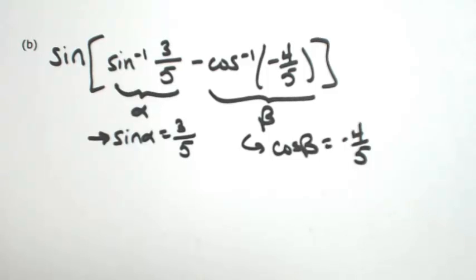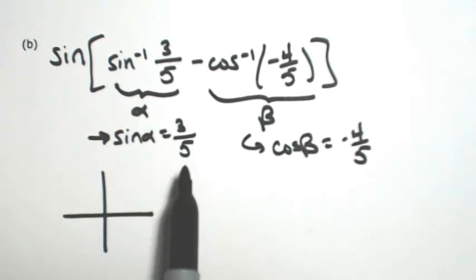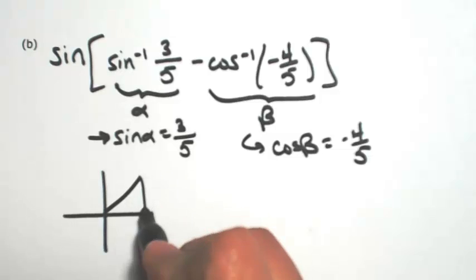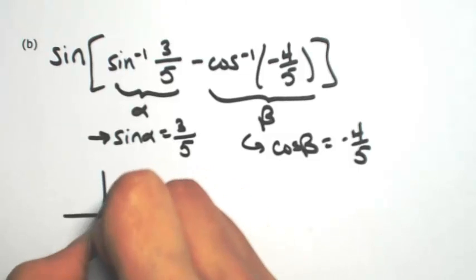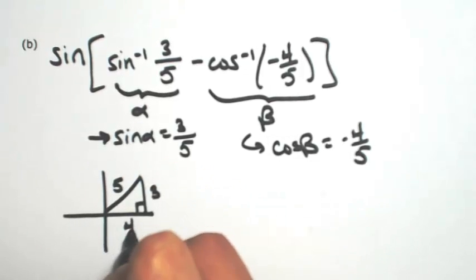Once again, we have to keep in mind the domain and range of the inverses. So in the case of talking about inverse sine, the outputs can only be in the first or the fourth. Since I get positive, this is going to be in the first. I'm going to draw a triangle in the first quadrant, whose sine is 3 fifths. I'm sure you can see that the adjacent side will be 4.